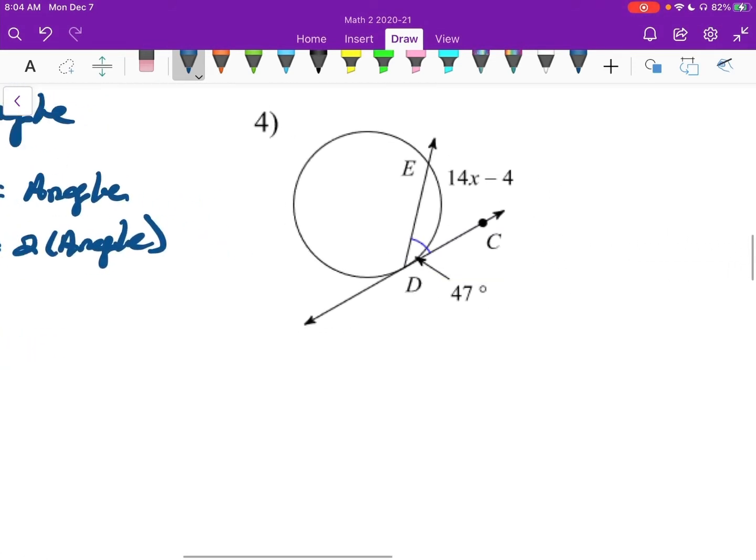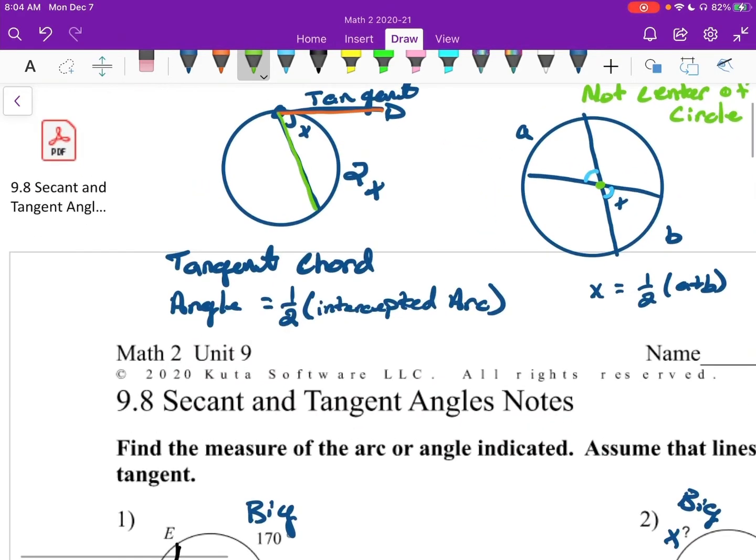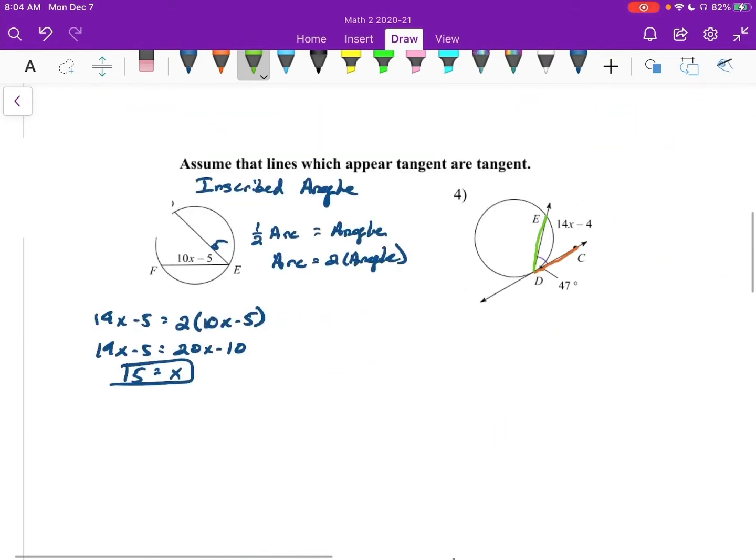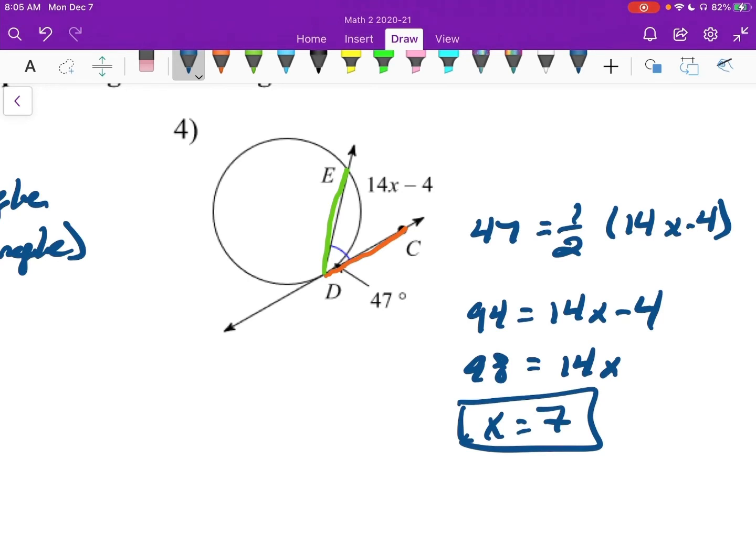All right. Number 4. So here, this is a tangent. And this is a chord. So we had a formula for that up top. I think it was the first formula we talked about. For a tangent and a chord, the angle is half the arc. So I could say, well, 47, that's our angle, is half the arc. So 14X minus 4. I could also multiply by 2, and I think I'm going to do that. Whenever I multiply by 2, I'll have 94 equals 14X minus 4. So 98 is 14X. And whenever I divide by 14, I get, 98 divided by 14, 7. So there we are.